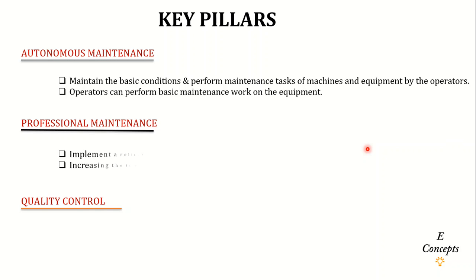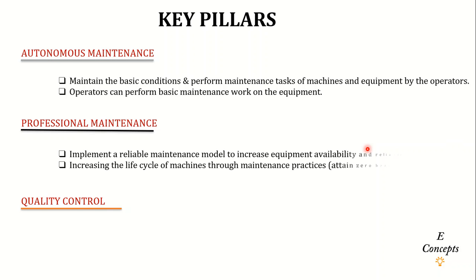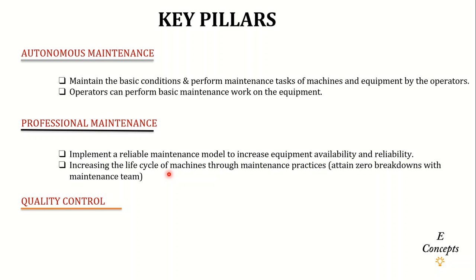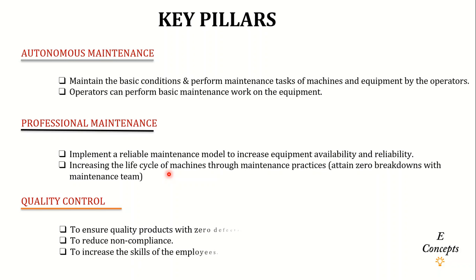The fifth pillar is Professional Maintenance, which involves having a reliable maintenance model or system — such as a Computerized Maintenance Management System — to ensure equipment availability and reliability for most of the time, aiming for zero breakdowns. Unlike autonomous maintenance where operators do basic maintenance, here we have a professional maintenance team.